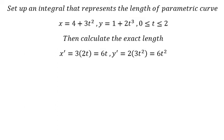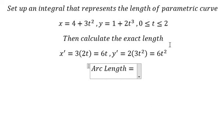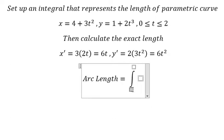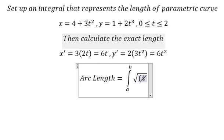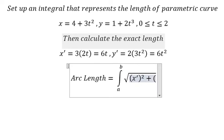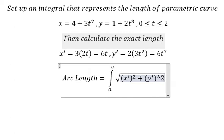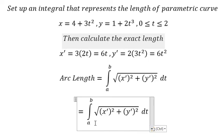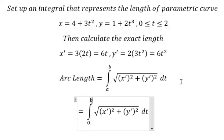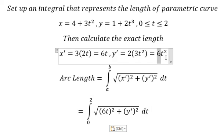Next, we set up the integration. So we have the integration from a to b, and we have the square root of the first derivative of x to the power of 2, plus the first derivative of y to the power of 2, and we have dt. So a is about number 0 and b is about number 2. This one corresponds to dx/dt, and this one corresponds to dy/dt.